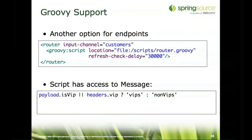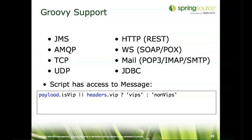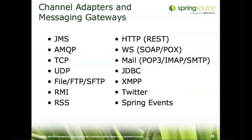In this case it's going to be a dynamic Groovy script that can be refreshed every 30 seconds if it's been modified since the last time it was invoked. At the bottom you see the script itself - it's very simple. We bind the payload and the headers into the script and you don't have to implement any interfaces or make it look more like Java. You can literally have a script this simple. We think of this as kind of the middle ground between SpEL expressions and POJOs, with the added benefit of dynamics.